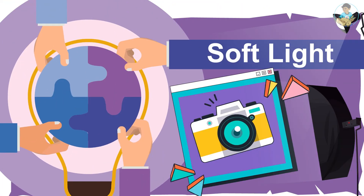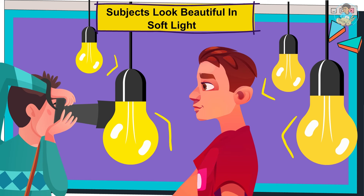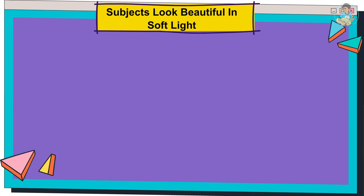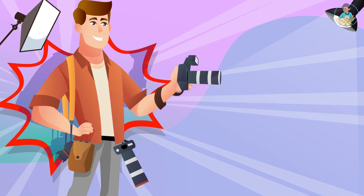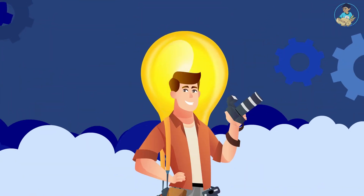Soft light, on the other hand, is more forgiving than hard light. Soft light reduces skin imperfections and almost all subjects look beautiful in soft light. Soft light is the preferred choice for most beauty and fashion photography. Sometime later we will learn about diffusers and other accessories that photographers use to control the light quality.